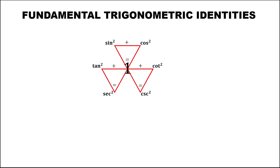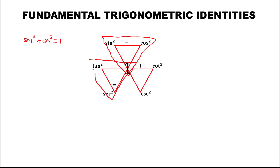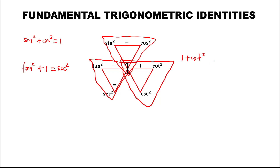For the square of the functions, we need to focus on a triangle. For the first triangle, sine squared plus cosine squared equals 1. For the second triangle, tangent squared plus 1 equals secant squared. And for the last triangle, 1 plus cotangent squared equals cosecant squared.